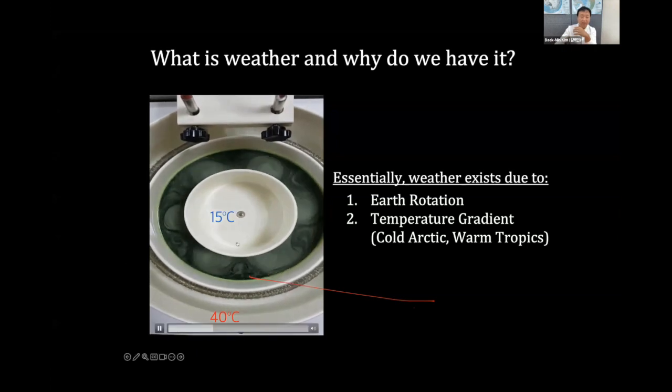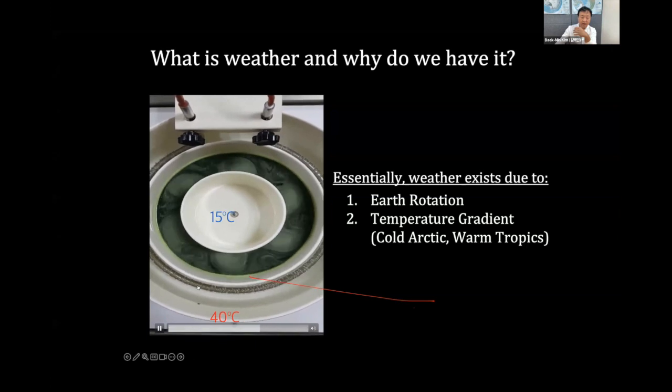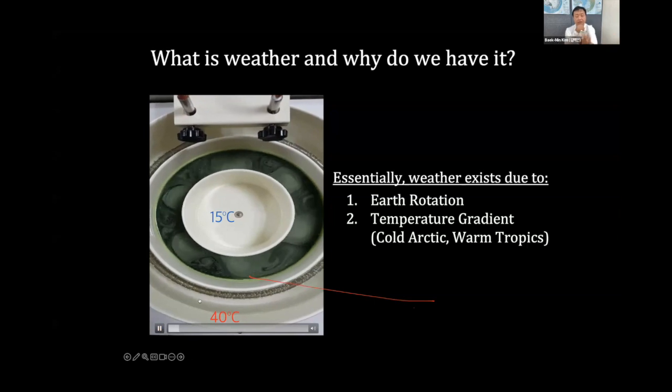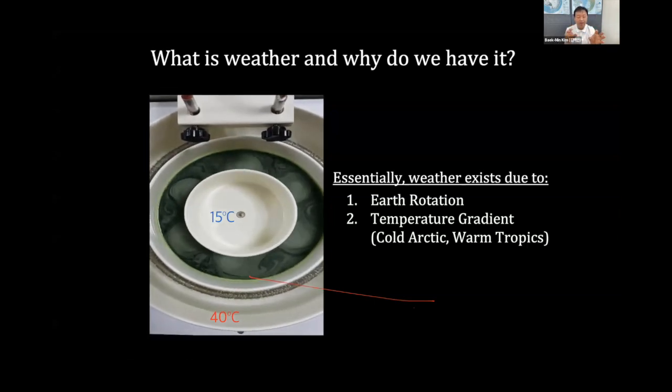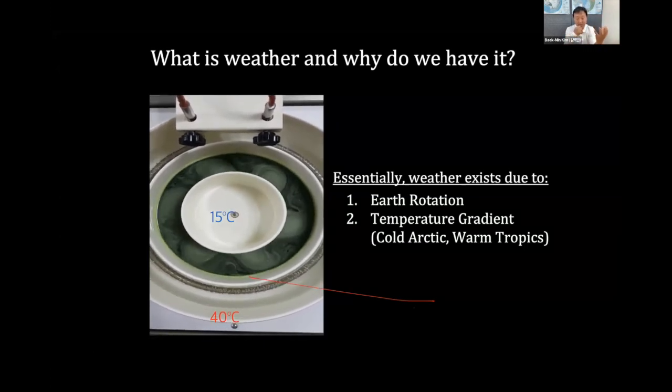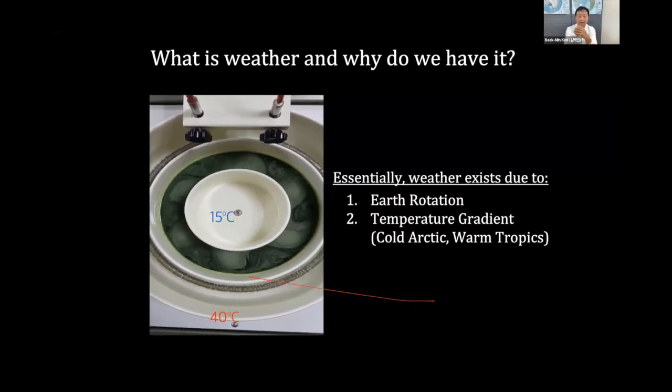This is a result of this pan experiment. I keep the central tank very cold and I keep the outside of the middle tank very warm through the heat pipe. So in this case, weather patterns exist in the middle. You can see the beautiful weather pattern inside the middle tank. Because the Arctic is cold or the tropics are warm, and we also have a rotating Earth.